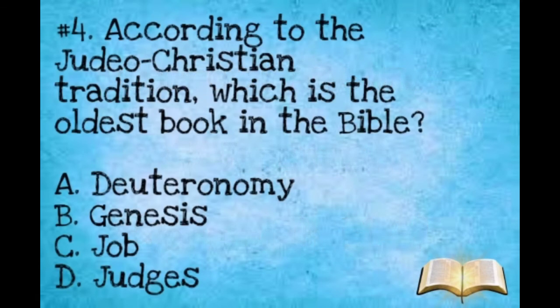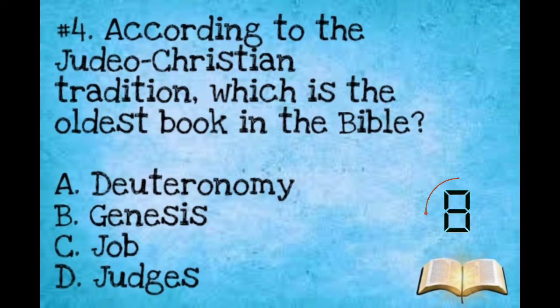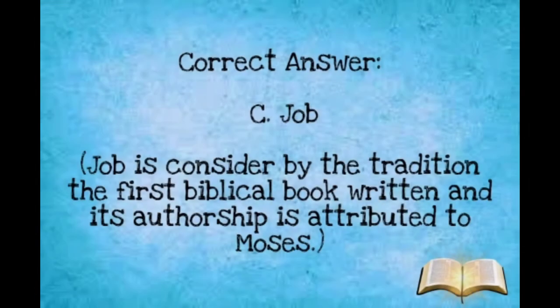Question number four: According to the Judeo-Christian tradition, which is the oldest book in the Bible? A: Deuteronomy. B: Genesis. C: Job. D: Judges. The correct answer is letter C, Job. Job is considered by tradition the first biblical book written, and its authorship is attributed to Moses.